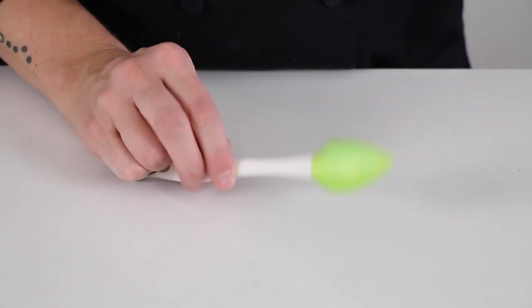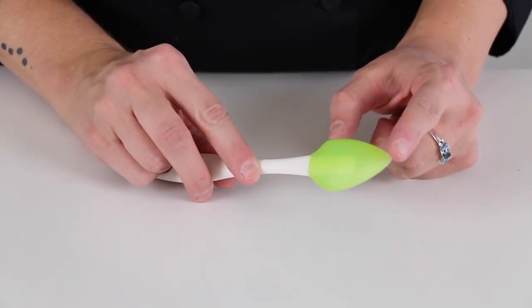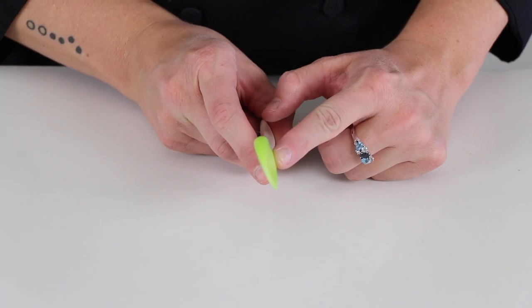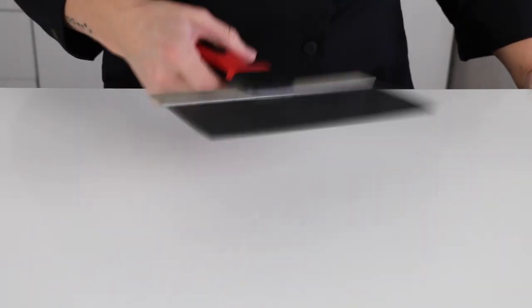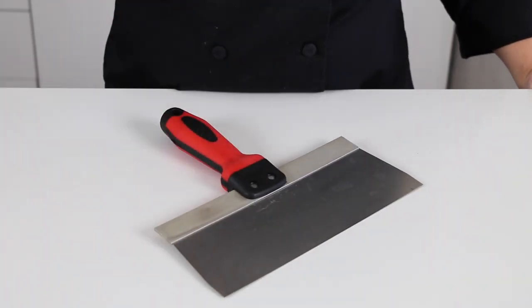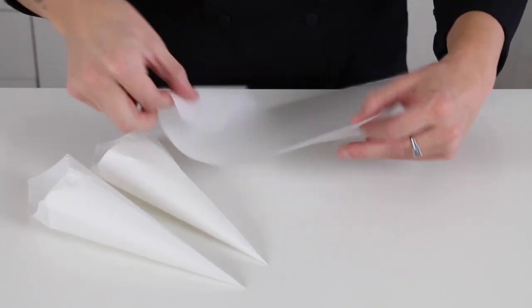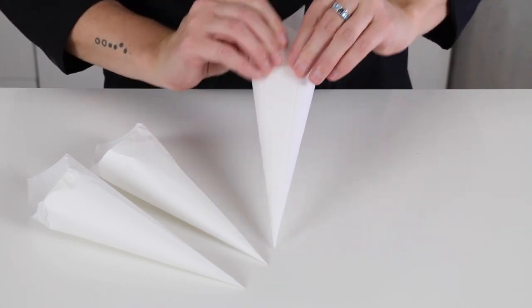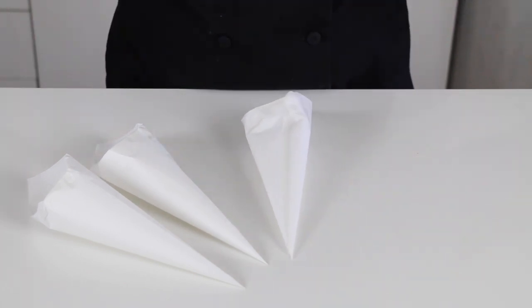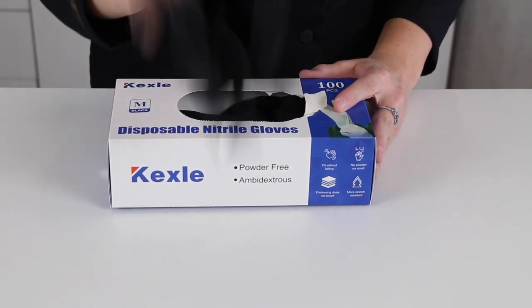A mini spatula like this or something similar with a soft point. A chocolate scraper tool. Some parchment paper sheets. Some parchment paper piping bags. Just check out the video above to see how to make these. Food safe gloves.